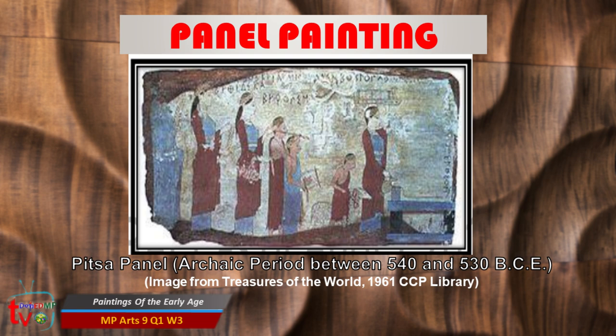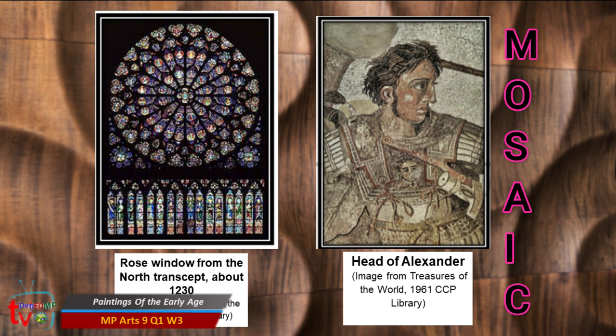Panel painting — there are paintings on the flat panel of wood. It can be either a small, single piece, or several panels joined together. Most of the panel paintings no longer exist because of their organic composition. The earliest known panel painting is the Pitsa panel from the archaic period, between 540 and 530 BCE. Mosaic — it is an art process where an image is created using an assemblage of small pieces of colored glass, stones, or other materials. This technique is used for decorative art or interior decorations.